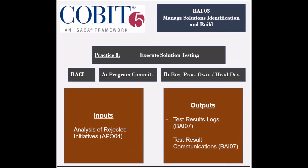The eighth practice is to execute the solution testing. The entities responsible are the business process owners, the head of IT development, and the head of IT operations. The entity held accountable is the program steering committee. The practice receives one input: the analysis of rejected initiatives from the APO-4 process. It generates two outputs: the test result log and the test result communications, both to be used by the BAI-7 process.